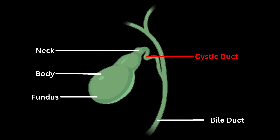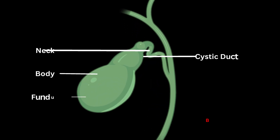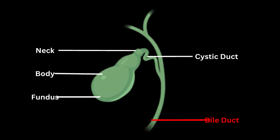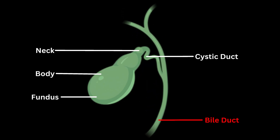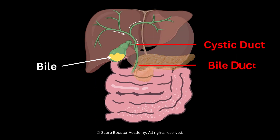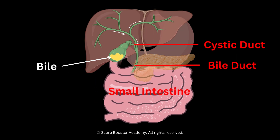The cystic duct connects the gallbladder to the common bile duct. It allows the flow of bile from the gallbladder into the common bile duct, where it continues its journey to the small intestine.